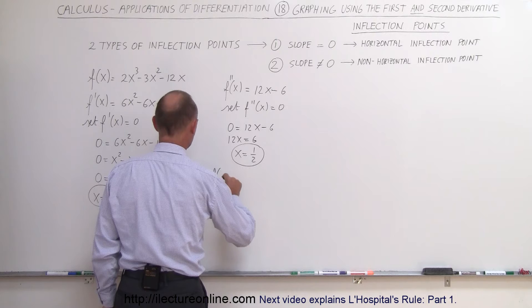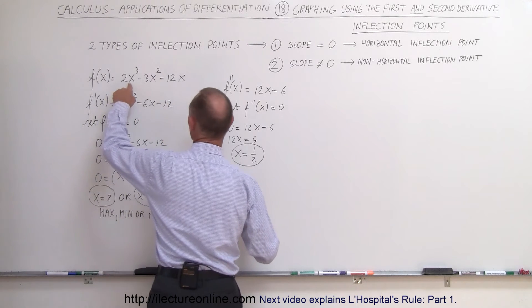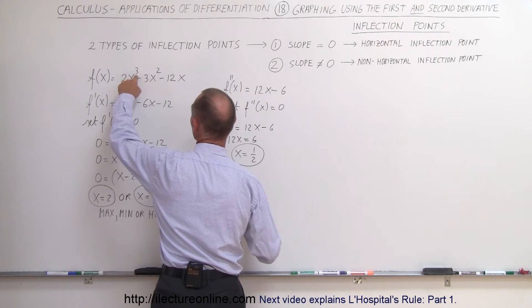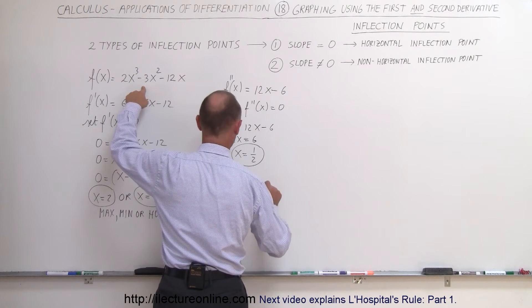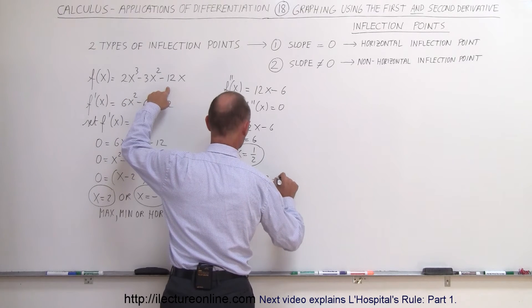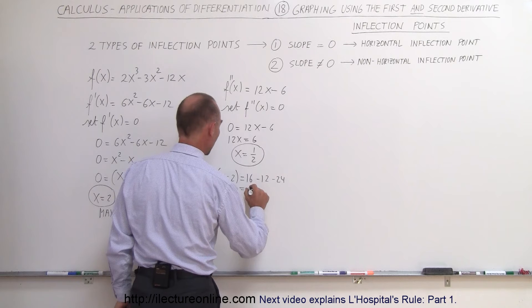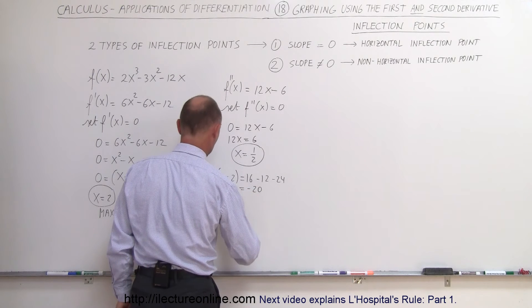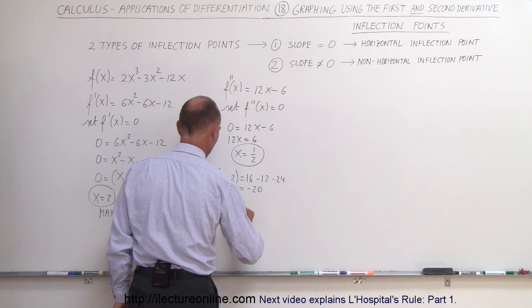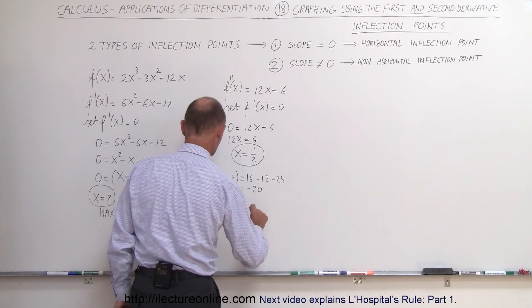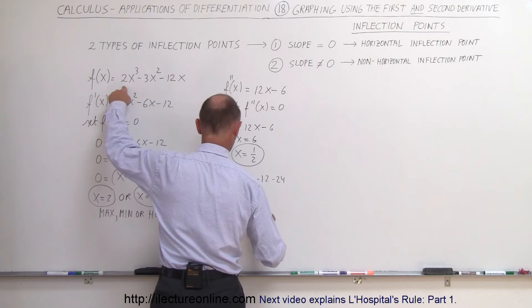f of 2, when x is equal to 2, is equal to — plugging 2 in — we get 2 cubed, that's 8, times 2 is 16, minus that would be 12, minus 24. So, when x equals 2, we have y equals minus 20. For the second point, x equals minus 1: minus 1 cubed is minus 1, that's minus 2.